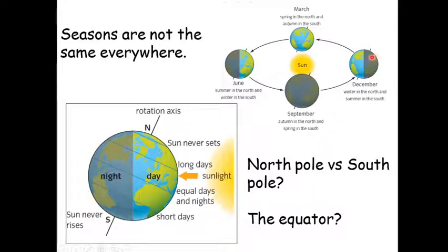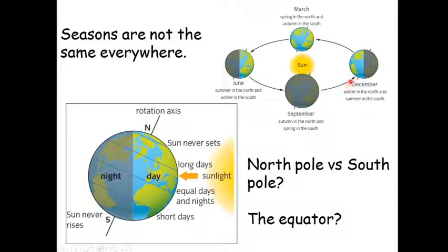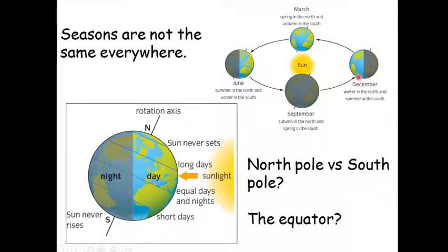Comparing that to December: the opposite is true. The North Pole is tilted away from the sun in December, so places very close to the North Pole don't receive any sunlight and have 24 hours of darkness. Meanwhile, places very close to the South Pole remain in sunlight the whole time — as the Earth rotates, they never go into darkness. That is the absolute extreme of seasons.